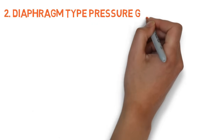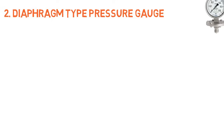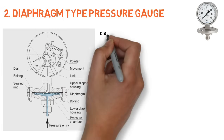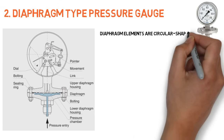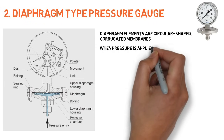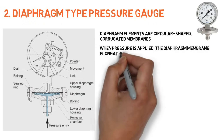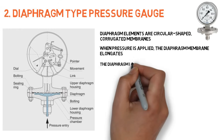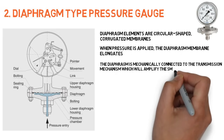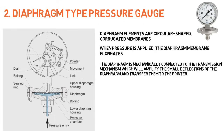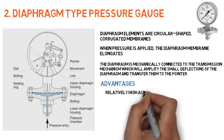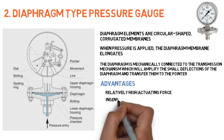Diaphragm type pressure gauge. Diaphragm elements are circular shaped corrugated membranes. When pressure is applied, the diaphragm membrane elongates. The diaphragm is mechanically connected to the transmission mechanism, which amplifies the small deflections of the diaphragm and transfers them to the pointer. In comparison with Bourdon tubes, these diaphragm elements have a relatively high actuating force and they are insensitive to vibration.